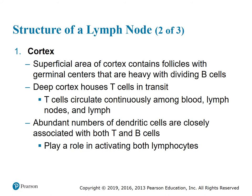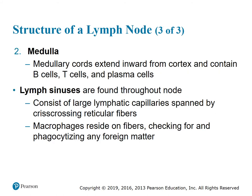Abundant numbers of dendritic cells are closely associated with both T and B cells and play a role in activating both lymphocytes. The medulla contains medullary cords that extend inward from the cortex and contain B cells, T cells, and plasma cells. Lymph sinuses are found throughout a node and consist of large lymphatic capillaries spanned by crisscrossing reticular fibers. Macrophages reside on the fibers, checking for and phagocytizing any foreign matter.